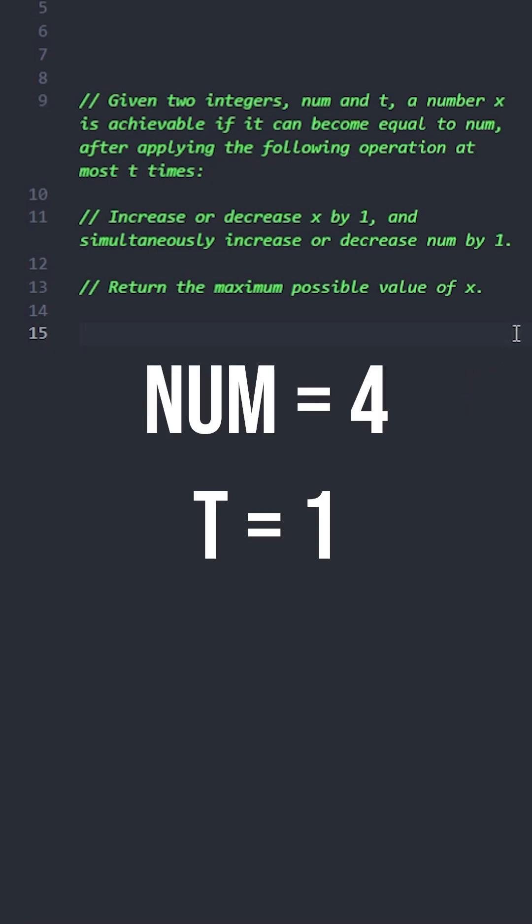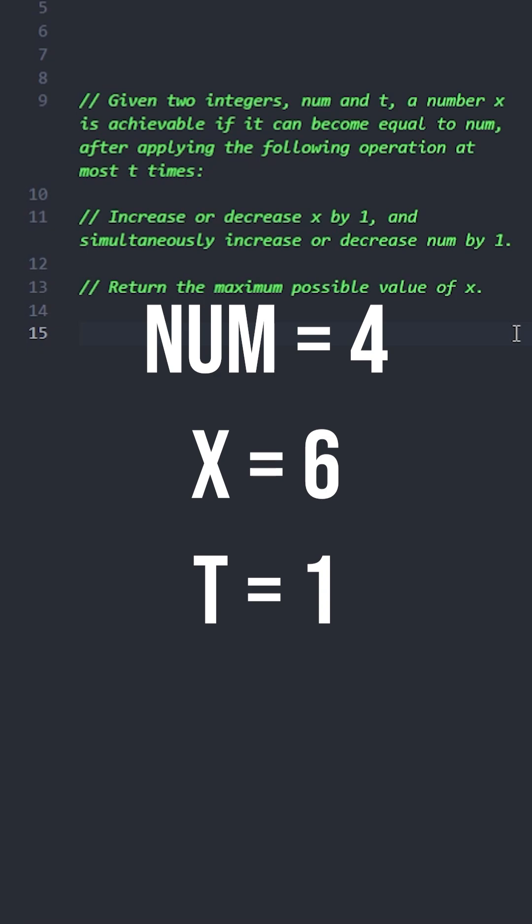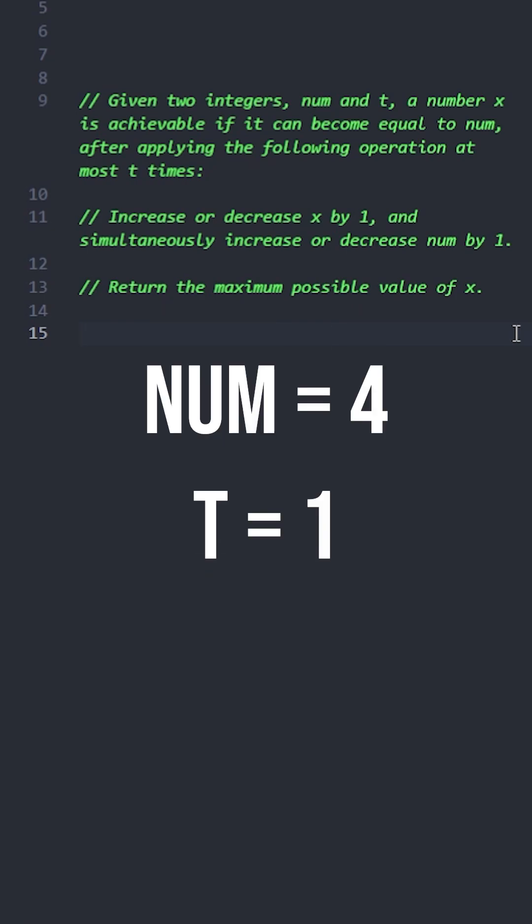Let's understand the question with an example. If num equals 4 and t equals 1, to find the maximum achievable x, we need to start with the highest possible x value and make x and num meet at some point within t operations. This means if we start with x being larger than num, we will need to decrease x by 1 and increase num by 1 in each operation, which closes their gap by 2 units per operation.